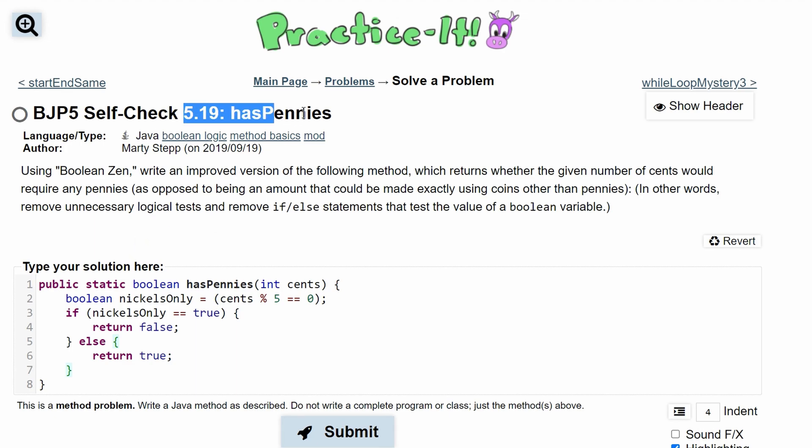For Practice-It self-check 5.19 has pennies, we need to use Boolean Zen and write an improved version of the following method which returns whether the given number of cents, this parameter here,